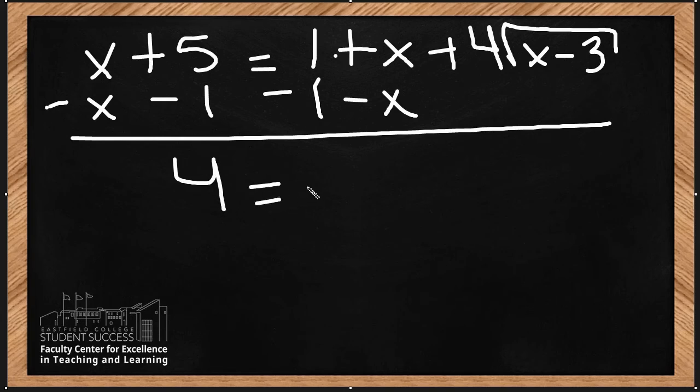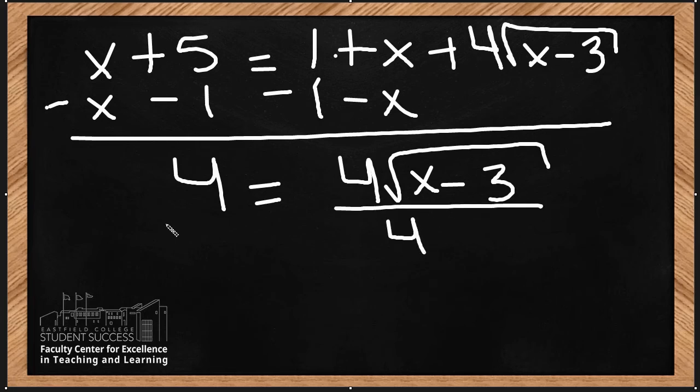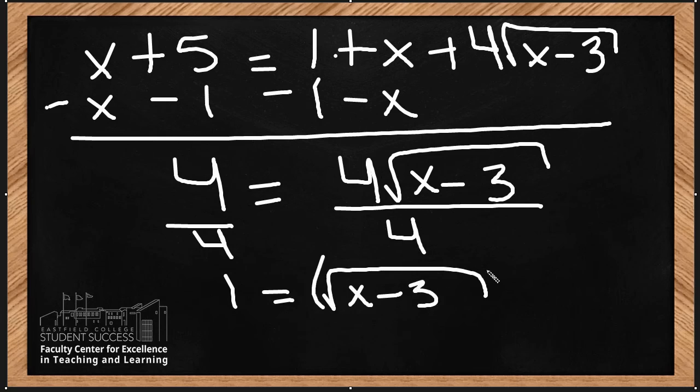And that is going to give me 4 equals 4 root x minus 3. Since I am multiplying, I need to divide by the 4 on the outside. And just as before, we need to square both sides to get rid of the radical, and now we solve for x by adding 3 to both sides.